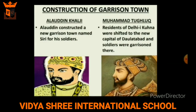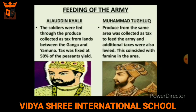Another comparison is on the construction of garrison towns. Alauddin Khalji constructed a new garrison town named Siri for his soldiers. Whereas Muhammad Tughlaq shifted the residents of Delhi to a new capital, Daulatabad, and soldiers were garrisoned there. Regarding feeding the army: Alauddin collected produce as tax from the lands between the Ganga and Yamuna — tax was fixed at 50% of the peasants' yield. Muhammad Tughlaq collected produce from the same areas as tax to feed the army, and additional taxes were also introduced.